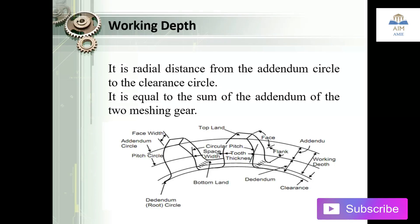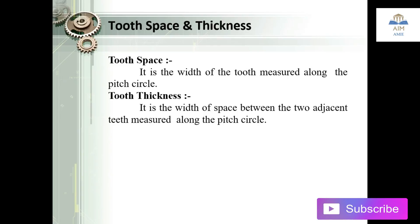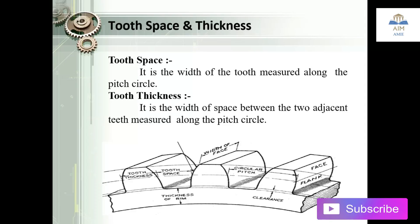The working depth is the stress concentration area between the two meshing gears. Next are tooth space and tooth thickness. The tooth space is the width of the space between two adjacent teeth measured along the pitch circle. The tooth thickness is the width of one tooth measured along the pitch circle. As shown in the image, the tooth space is the distance between two adjacent teeth, and the tooth thickness is the width of a single tooth.